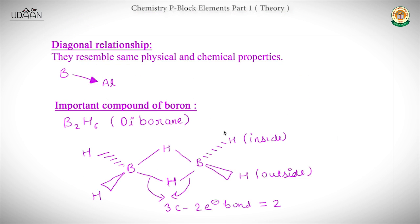As already mentioned, stability of the lower oxidation state increases while moving down the group, due to the inert pair effect. So now I will explain what the inert pair effect is. Write the heading: Inert Pair Effect.